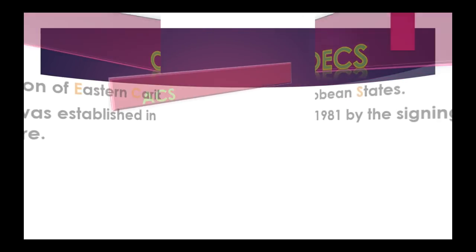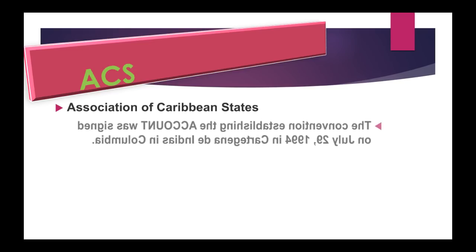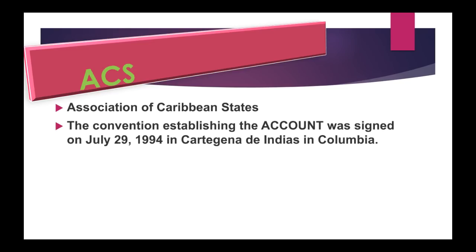Next, ACS stands for the Association of Caribbean States. The convention establishing the ACS was signed on July 29, 1994, in Cartagena de Indias, Colombia.